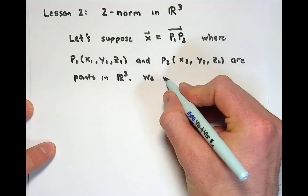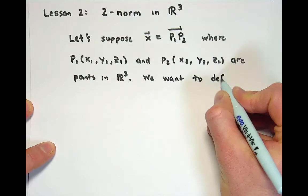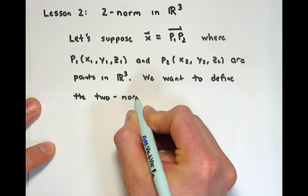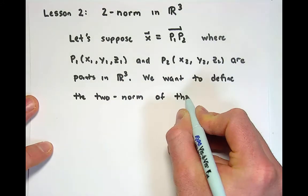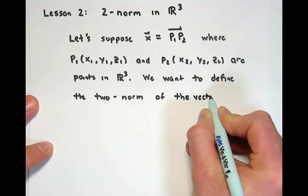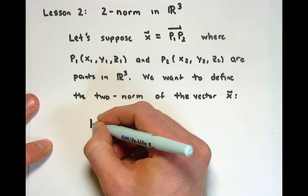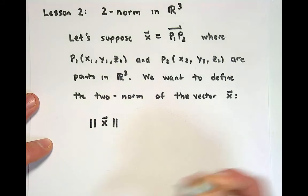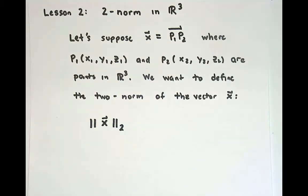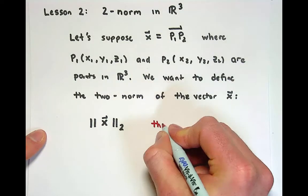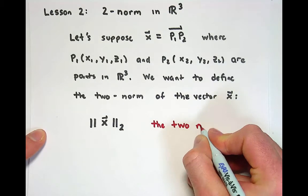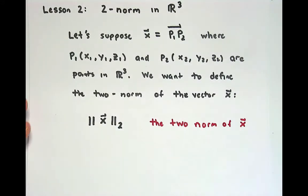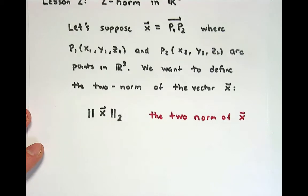We want to define the 2-norm of this vector. The 2-norm of the vector will be written as double vertical bars with a subscript 2, and this notation is read as 'the 2-norm of x.' To do so, we need to actually be able to visualize what's happening with these graphs.